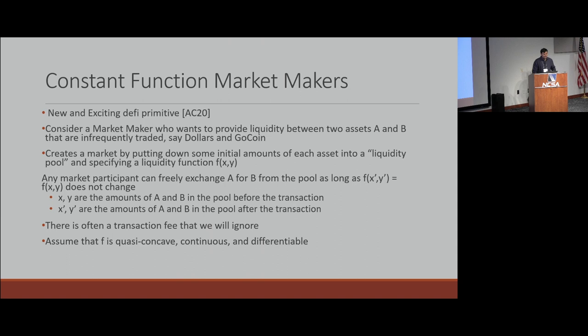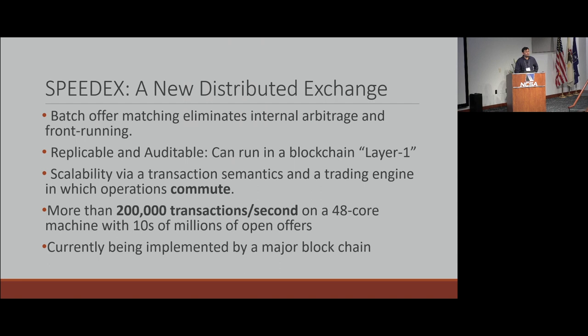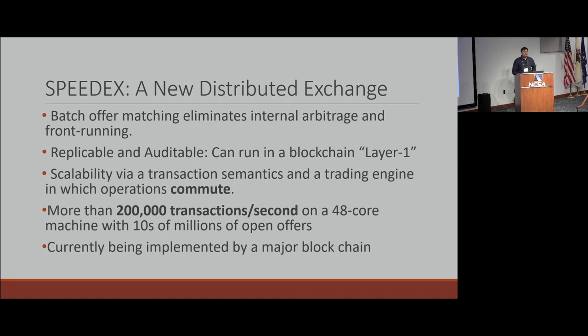The next part of the talk is about constant function market makers, which connects back to the first part. A question was raised: isn't the bottleneck in layer one actually writing to the chain? One reason writing on the chain is difficult is that blocks are assembled sequentially — one transaction changes the ledger, so you can't write the next transaction until the first is committed. Going through all the cryptographic primitives to decode transactions and update ledger balances sequentially is what makes it hard. But once you know that different trades in a block commute, you can parallelize writing to the blockchain.